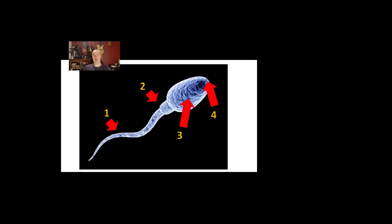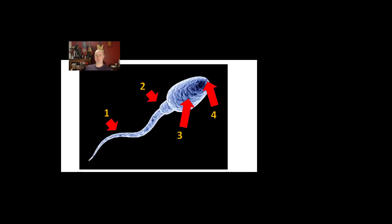We start off with the tail, or the flagella, and obviously that helps the sperm cell swim. But to pick up the marks in the mark scheme, I want you to talk about swimming to the egg — relating the structure of the cell with its function. If the function is to get to the egg, say 'swim to the egg,' not just 'swim.'